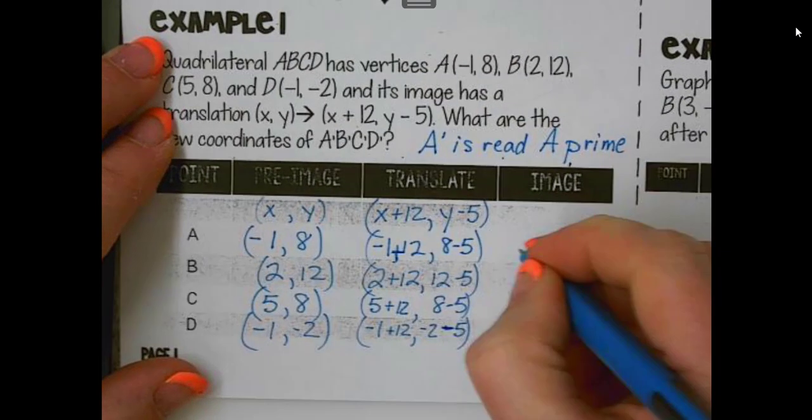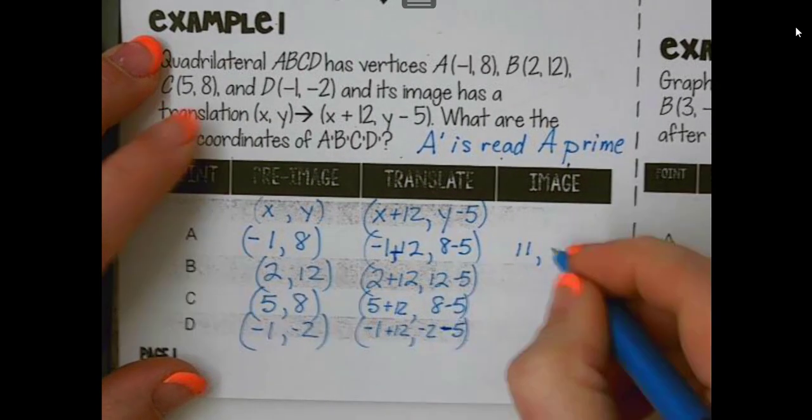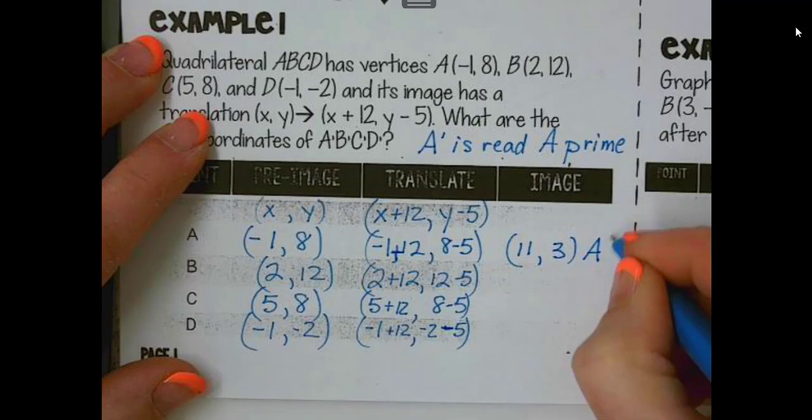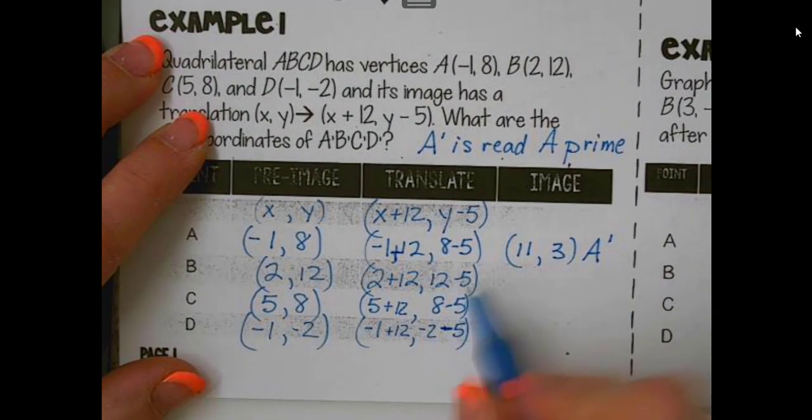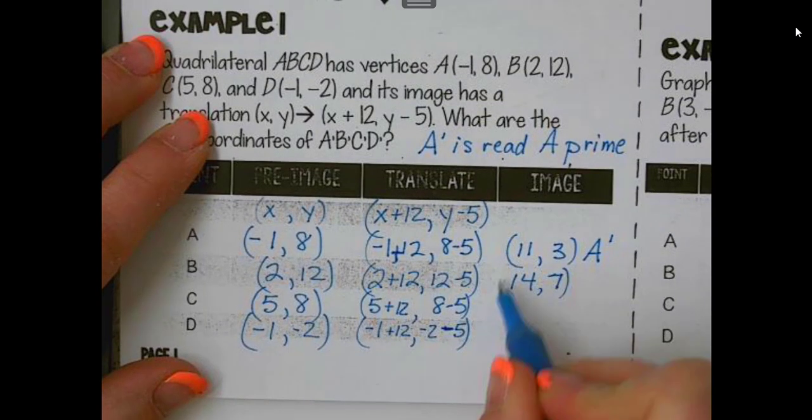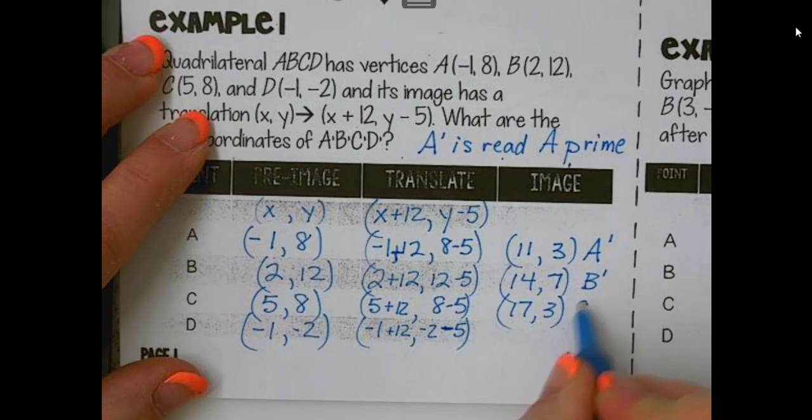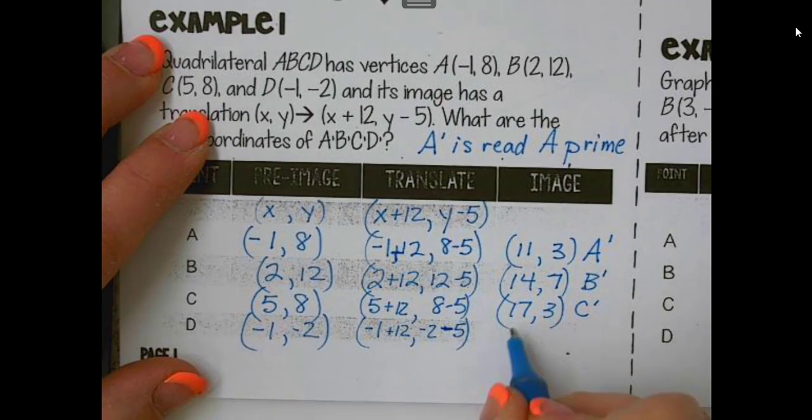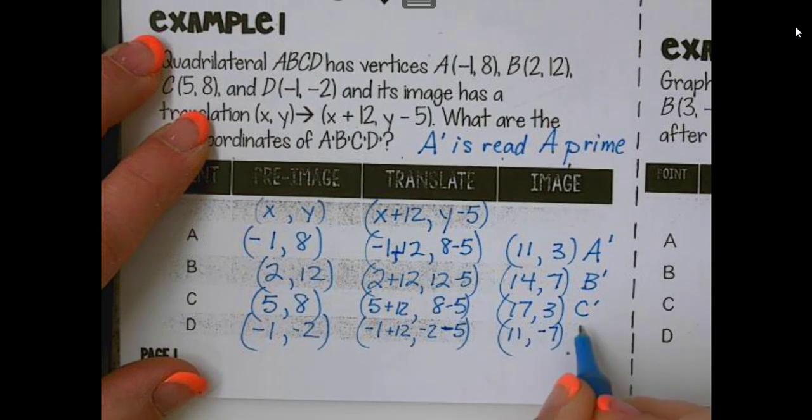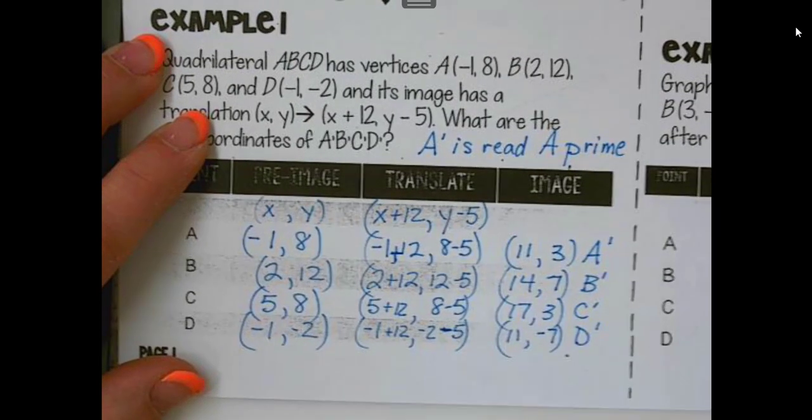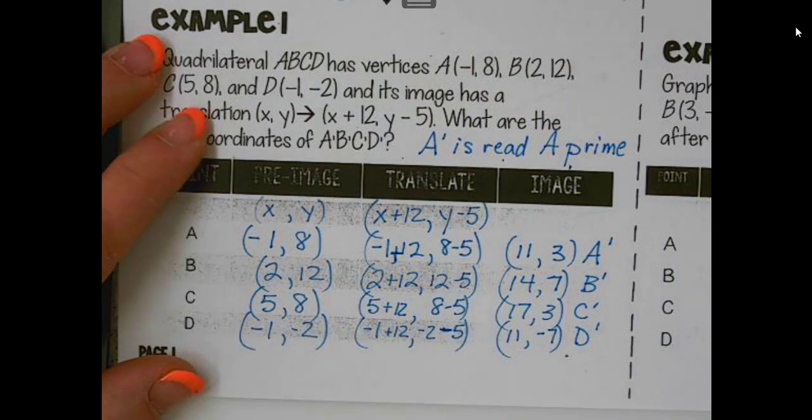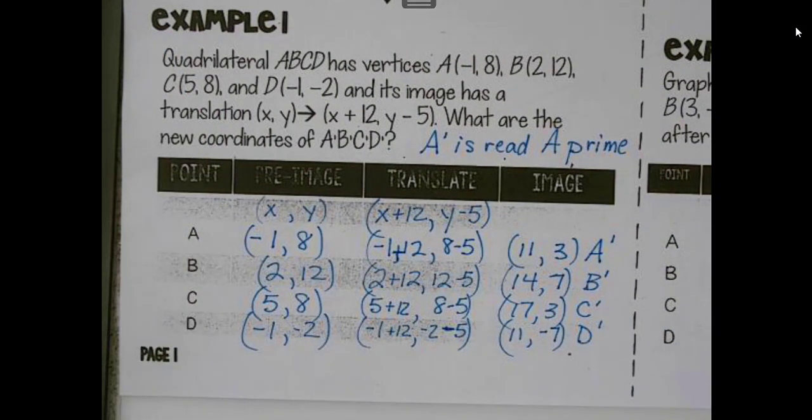So now our image is, we just solve it for x. Negative 1 plus 12 is 11. 8 minus 5 is 3. Now that gives us A prime. 14, 7, B prime. 17, 3, C prime, and 11, negative 7. So all I did was I simplified each of these. And these would be the new coordinates. Now on the next page, we're going to actually graph this. We're going to get the pre-image and then the image. And it should just be the same shape. We're just going to move it somewhere in the coordinate system.